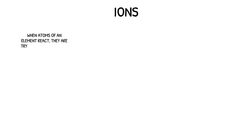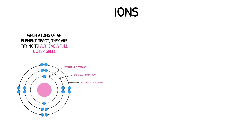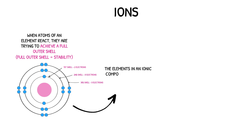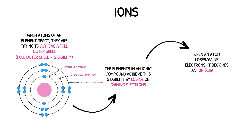When atoms of an element react, they are trying to achieve a full outer shell. With a full outer shell, the atom becomes stable. The elements in an ionic compound achieve this stability by losing or gaining electrons. When the element loses or gains electrons, it becomes a charged particle called an ion. There are two types of ions, and these are called cations and anions.